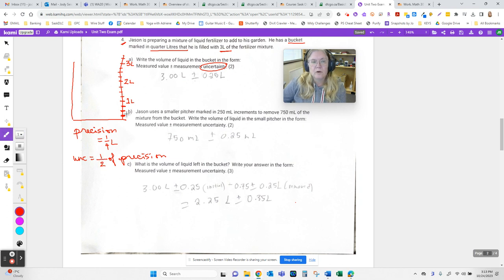So here we know our precision is a quarter of a liter or 0.25, which means uncertainty equals half of 0.25, which is 0.125 of a liter.